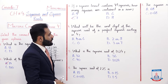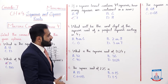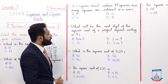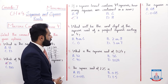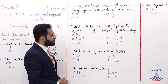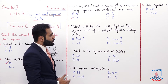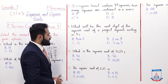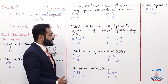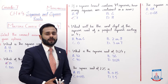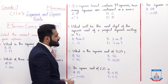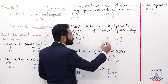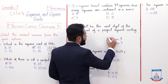MCQ number 4: what will be the unit digit of the square root of a perfect square ending in 4? The options are a) 4 or 6, b) 2 or 8, c) 0, and d) 3 or 7. The correct option is b) 2 or 8.